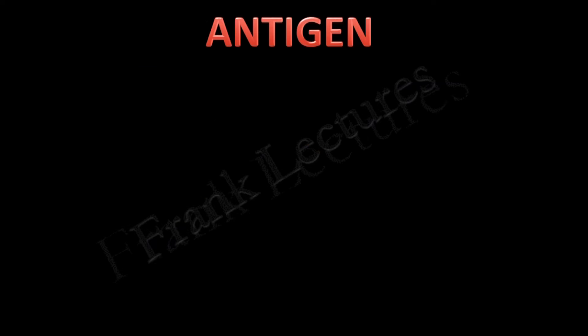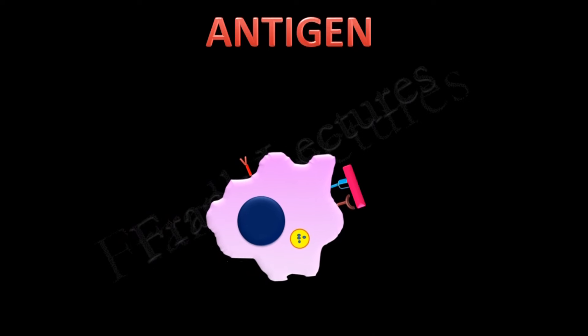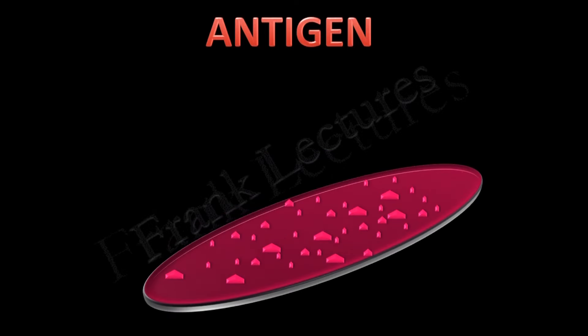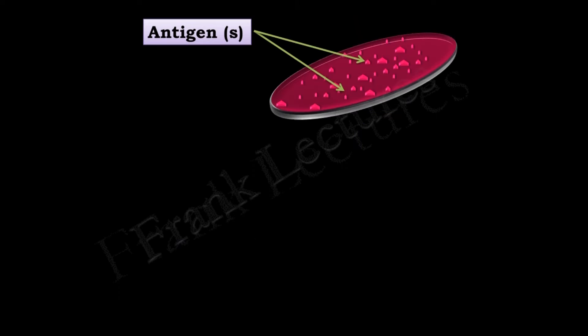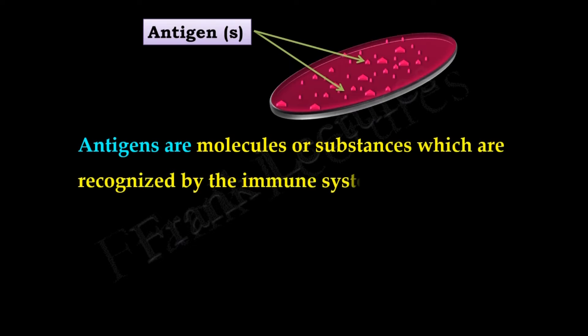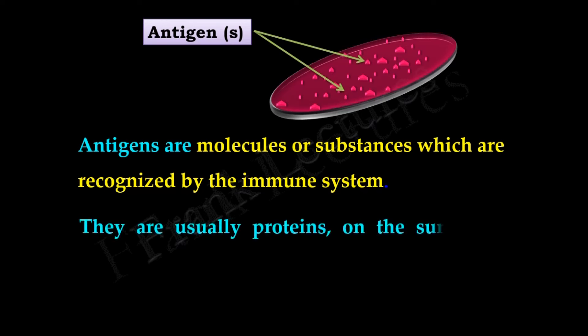We need to understand the term antigen, as it will be used frequently in upcoming lectures. Our immune system does not recognize the whole pathogen — it recognizes specific structures on the microbial surface. These protruding structures are known as antigens. Antigens are molecules or substances recognized by the immune system. They are usually proteins on the surface of microbes and their by-products.